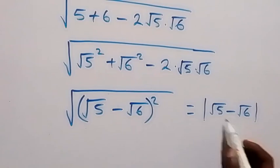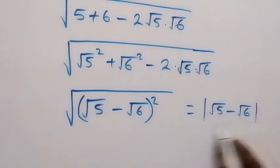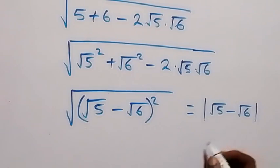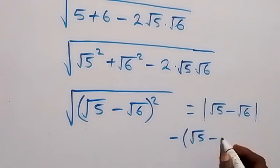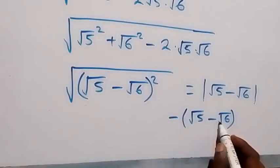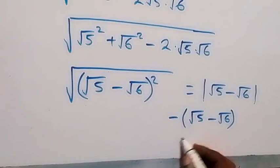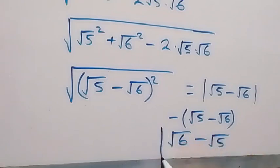Since √5 is less than √6, this will give us a negative value. That means here we introduce a negative sign and say minus (√5 minus √6), which makes √6 positive. So we get √6 minus √5 as the answer to this problem.